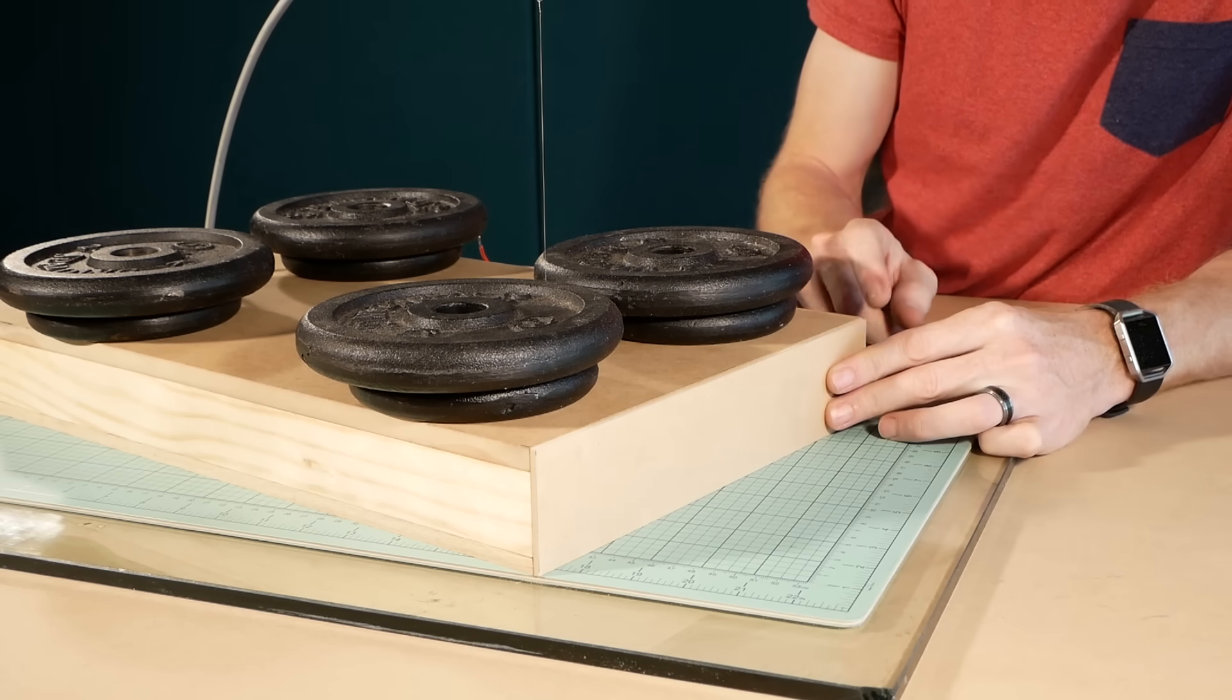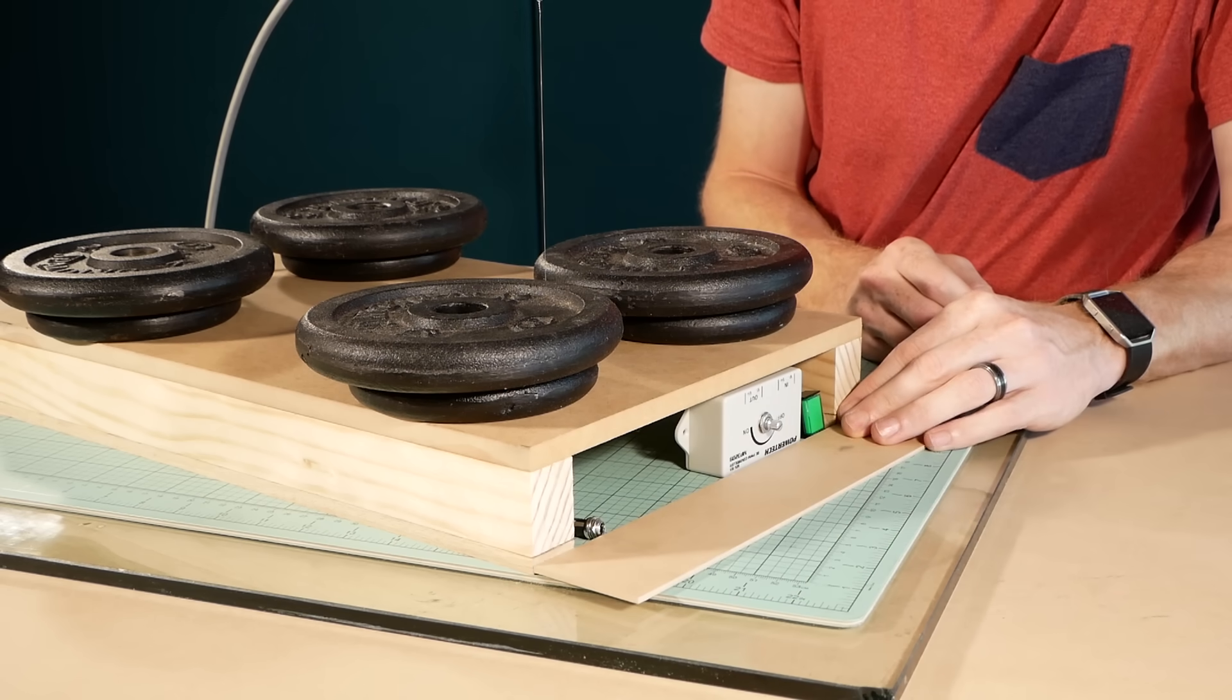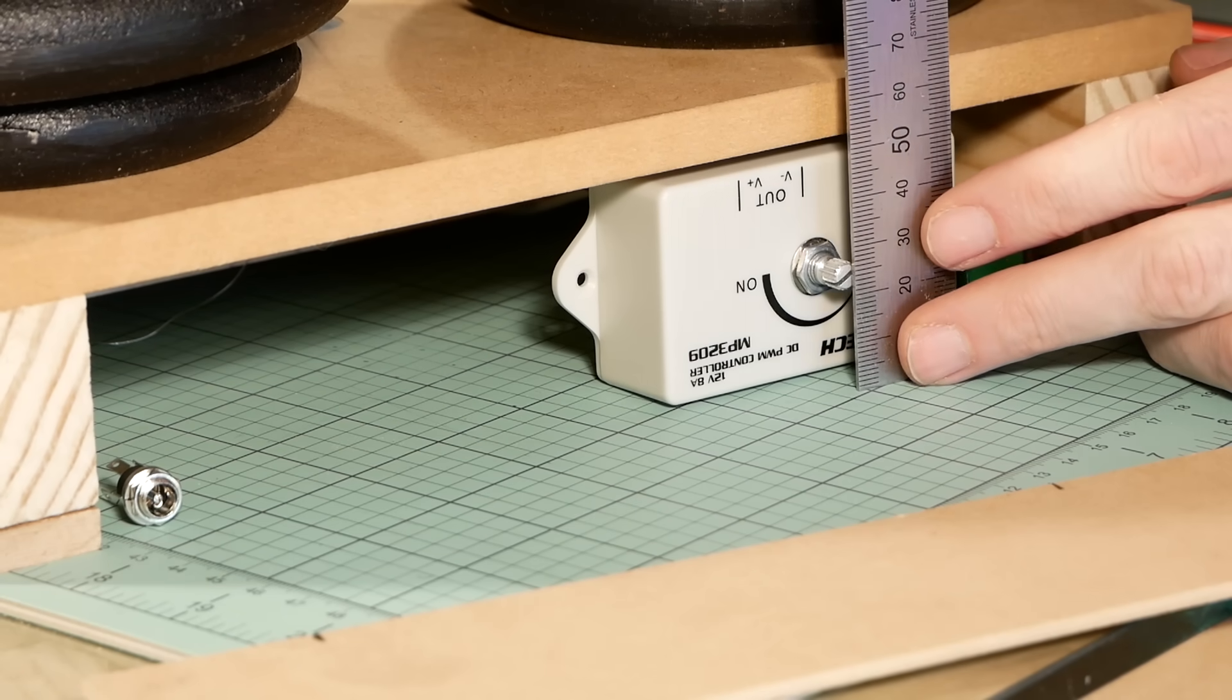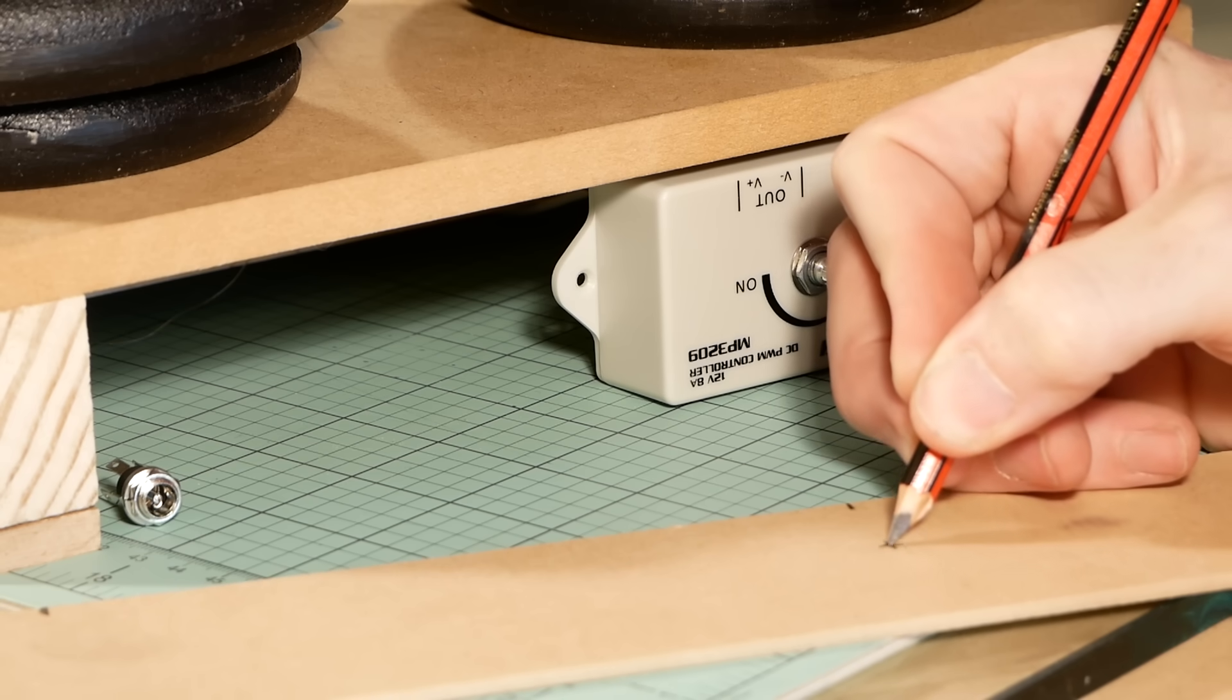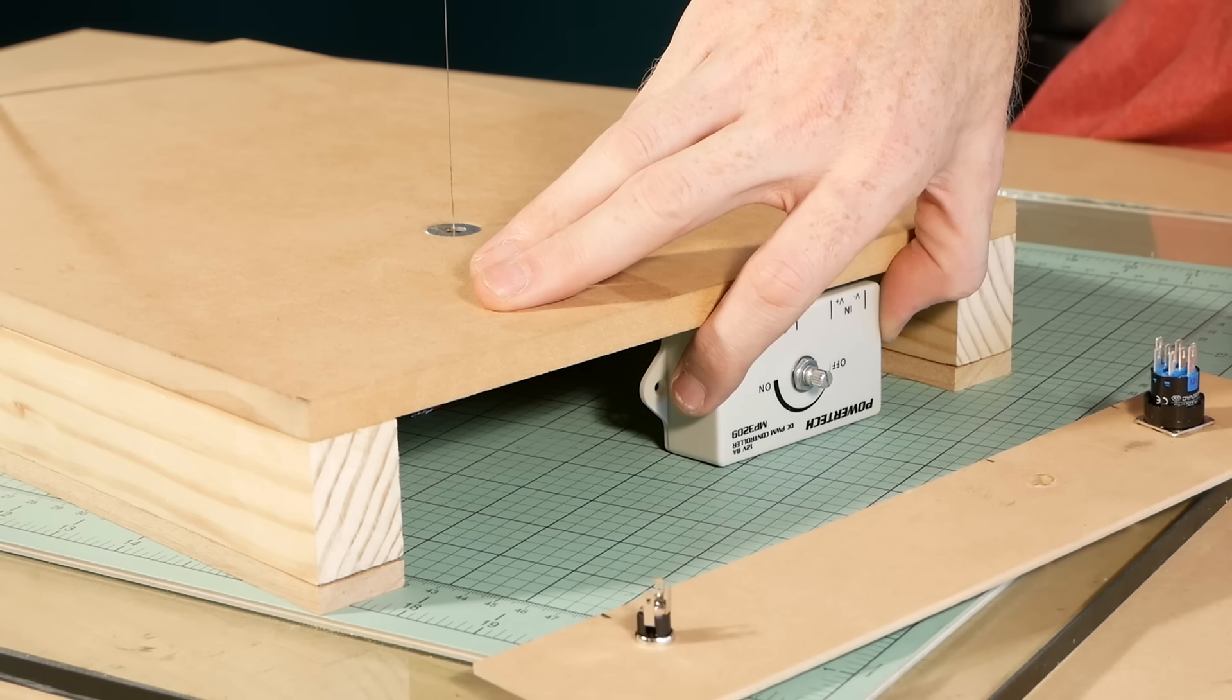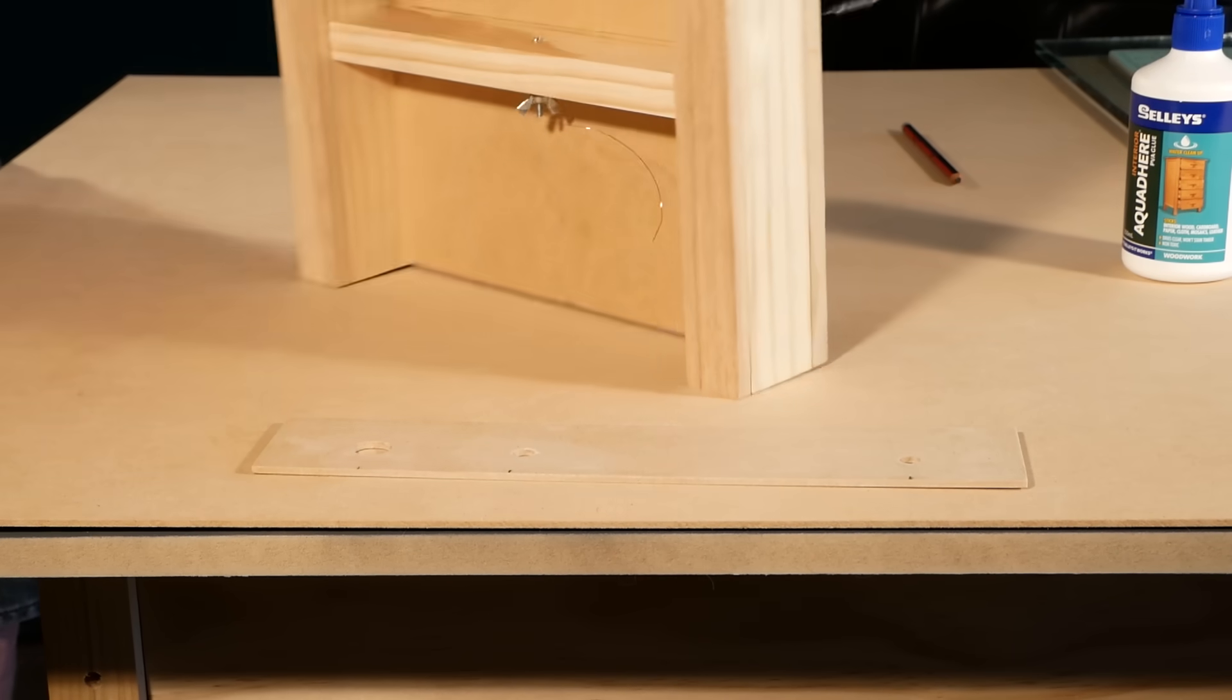The front fascia that will hold the switches is cut to fit using 3mm MDF. I position the electronics roughly in the positions I want them and mark their positions on the back of the fascia. The holes are drilled out and then tested to ensure everything fits. Now that I can see they all fit nicely I can glue the fascia onto the base and clamp it as it dries.